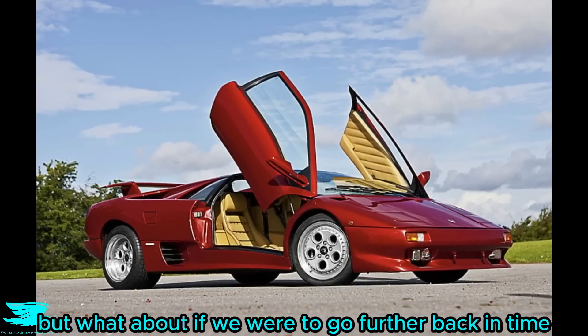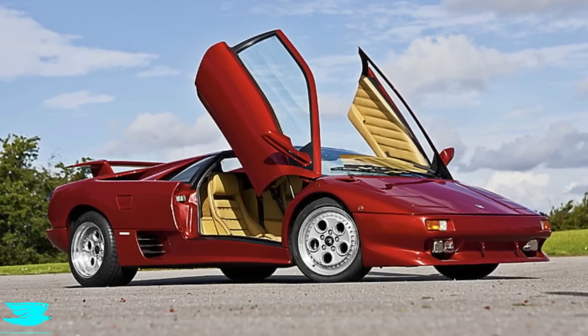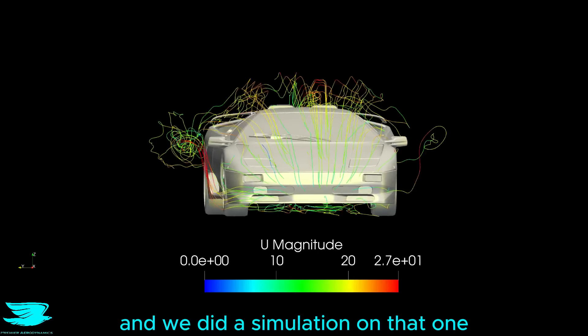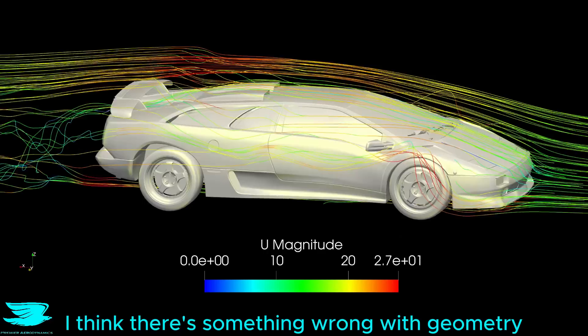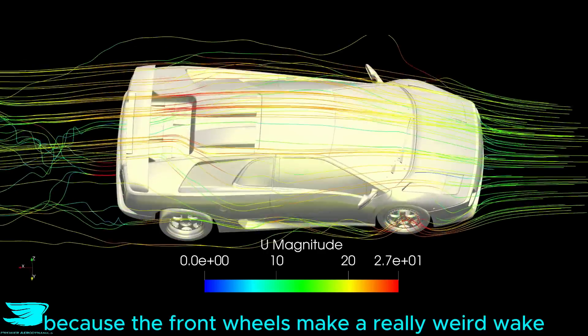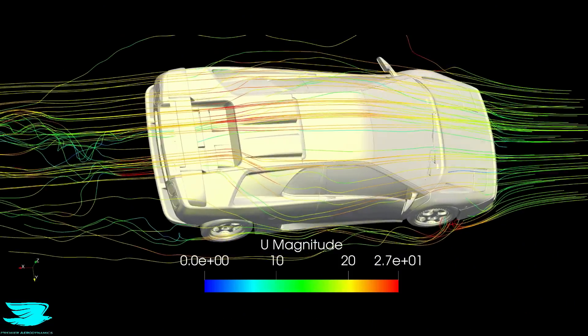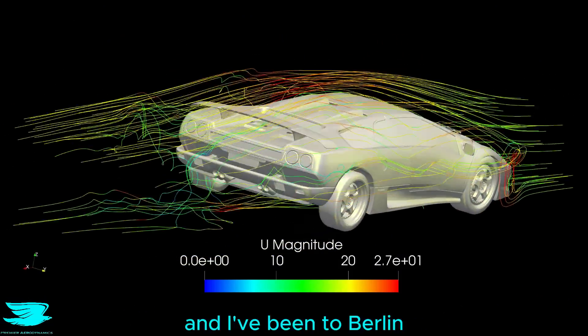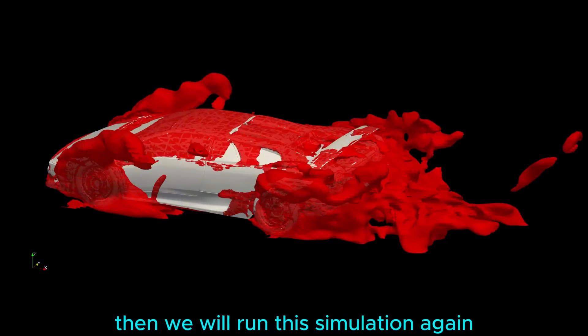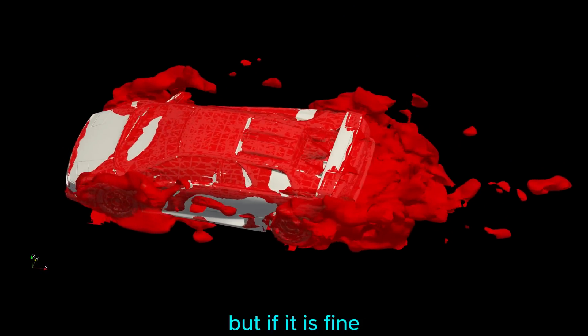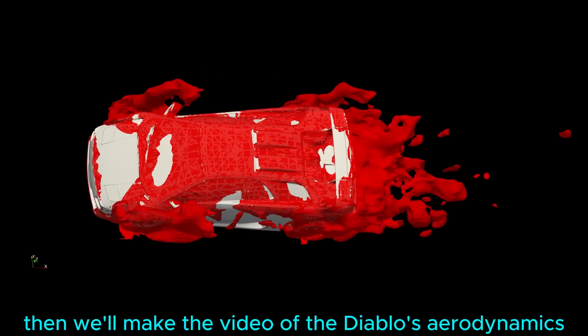But what about if we were to go further back in time, before the Murciélago, then there was the Diablo, and we did a simulation on that one. But before you get your hopes up, I just want to say that I think there is something wrong with the geometry because the front wheels make a really weird wake, possibly the weirdest thing I've ever seen, and I've been to Berlin. So we're going to check this model, and if there is something wrong with it, then we will run the simulation again with the corrected model, but if it is fine, then we will make the video of the Diablo's aerodynamics.